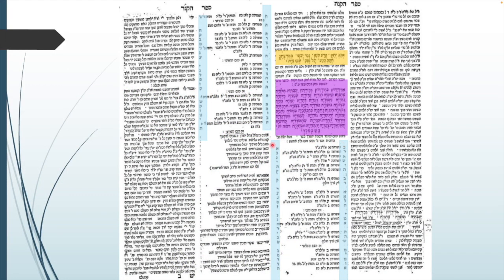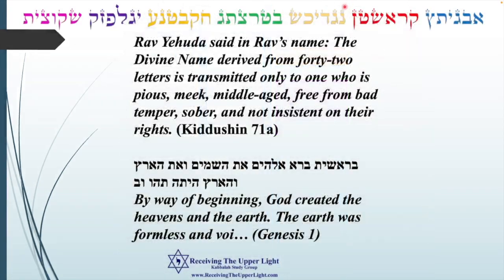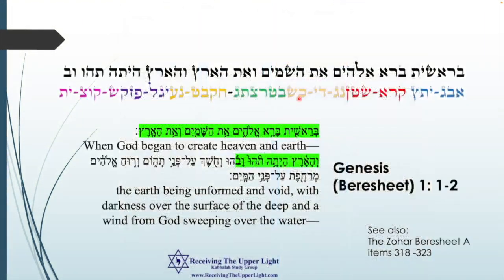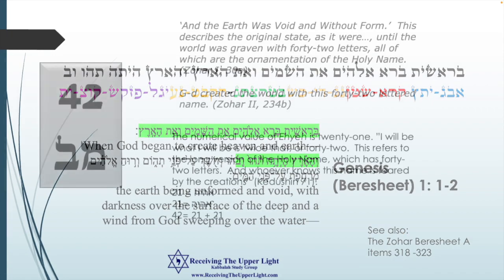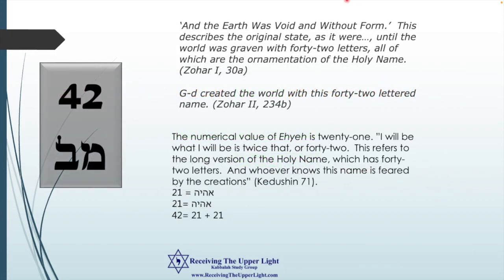This is what we saw in the Sefer HaKanah — the same thing we see in those two columns, now in horizontal form. You can also find this in the Zohar Bereshit Aleph, items 318 to 323 — from the Zohar with the commentary of the Baal HaSulam — and there you'll find an explanation of these 42 letters. And in the regular Zohar, in Zohar Volume 1, 30a, it says: 'And the earth was void and without form — this described the original state until the world was graven with 42 letters, all of which are the ornaments of the holy name.'